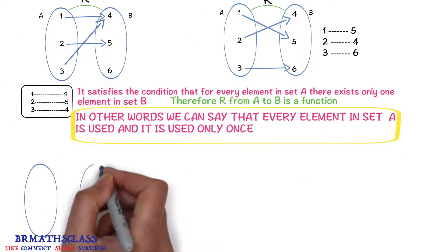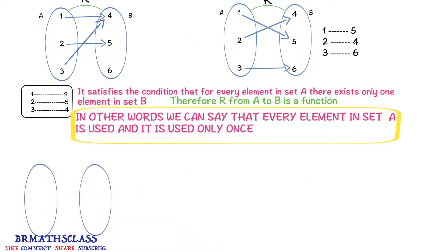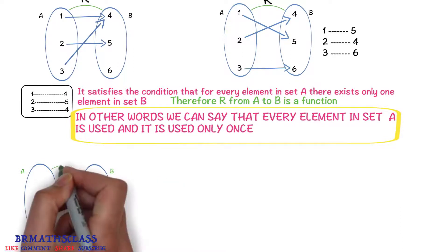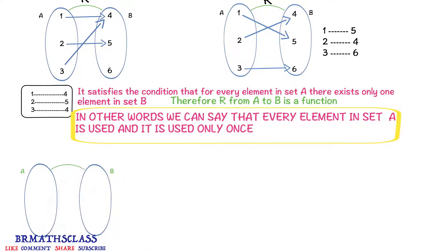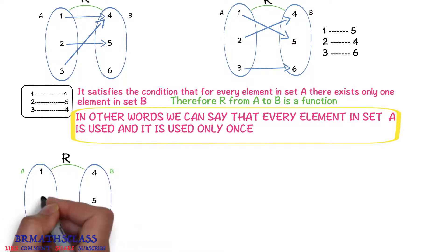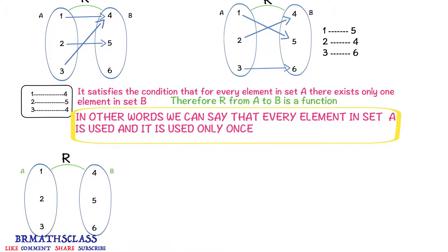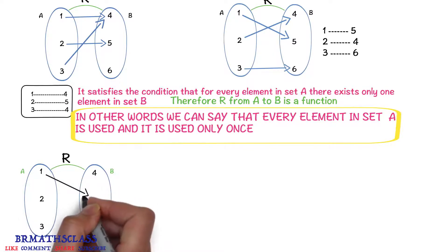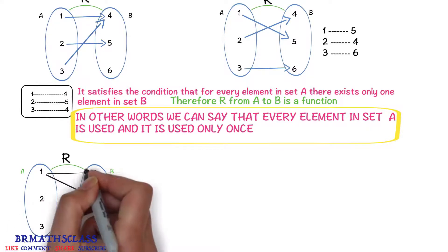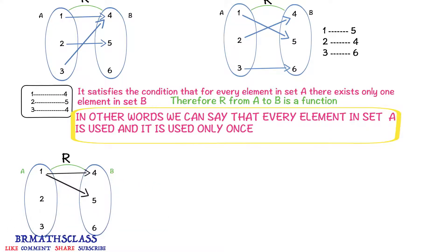Now we will understand the definition of function with one more example. Consider a relation r from a to b. Check whether for every element in set a there exists a unique element in set b. Here, 1 is related to 5, and also 1 is related to 4; 2 is related to 6; and 3 is related to 6.